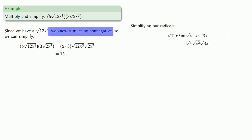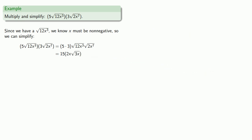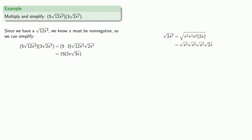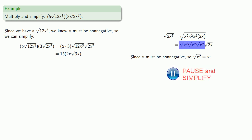Since x must be non-negative, square root of x squared equals x, and we can simplify our square roots. Now simplify square root of 2x to the 7th by removing perfect square factors. Again, since x must be non-negative, the square root of x squared is just x. We simplify all of the square roots of x squared, and since we have three factors of x, we write that as x to the power 3.